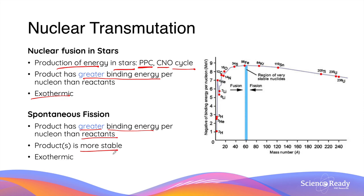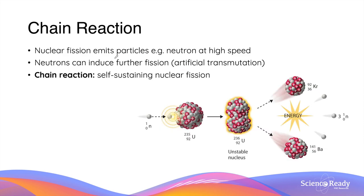Since the products of fission have higher binding energy, fission is also an exothermic nuclear transmutation process. Going back to the graph of binding energy of different nuclei, this also shows that spontaneous fusion only occurs for elements smaller than iron, because the products will have higher binding energy than the reactants. Conversely, on the right-hand side of the graph, nuclei larger than iron would undergo spontaneous nuclear fission to produce smaller nuclei, and those smaller nuclei will also have higher binding energies than the original reactants.